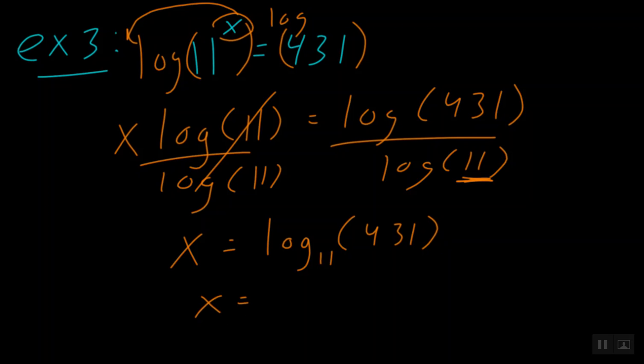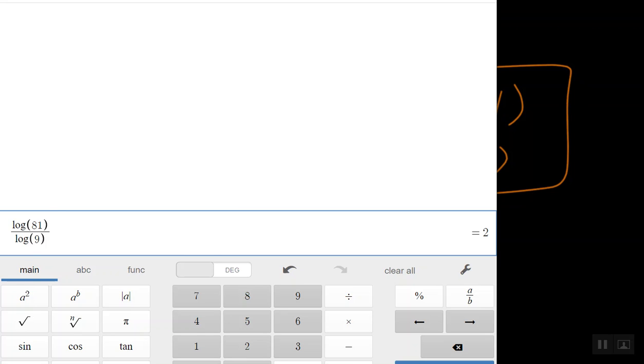So what in the world does x equal? So we've got 431 on top. And this time I'll kind of cheat a little bit. And on the bottom, we have that 11. And it looks like our answer is 2.53.